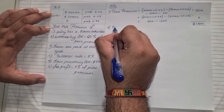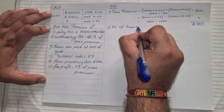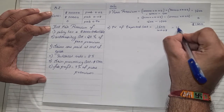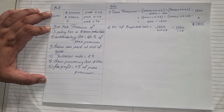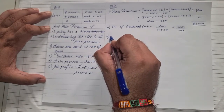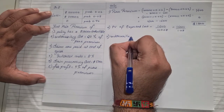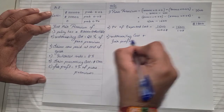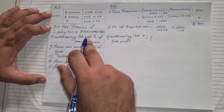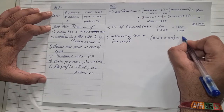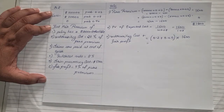Step two: PV of expected claim equals pure premium of $1,600 divided by 1.08. We keep it as 1,600 upon 1.08 and divide at the final stage. Step three: underwriting cost plus fair profit equals (0.20 plus 0.05) into pure premium of $1,600, which is 0.25 into 1,600, equals $400.